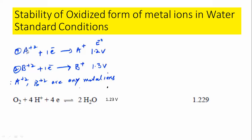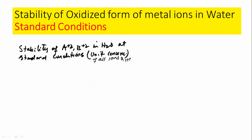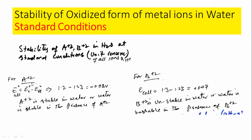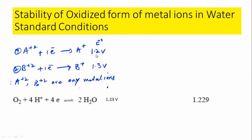We are going to consider one by one the spontaneity of the oxidized metal ions with water at standard conditions. Standard condition means all concentrations are unit concentration. For A²⁺, you calculate the cell potential: the potential here is 1.2 V, and the water half cell potential is 1.23 V. We check whether A²⁺ may reduce or oxidize to determine if the reaction is spontaneous.